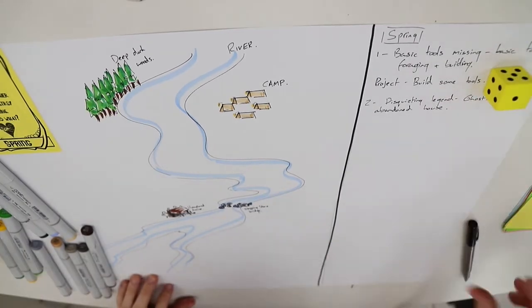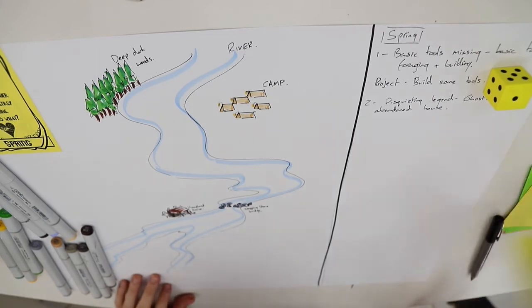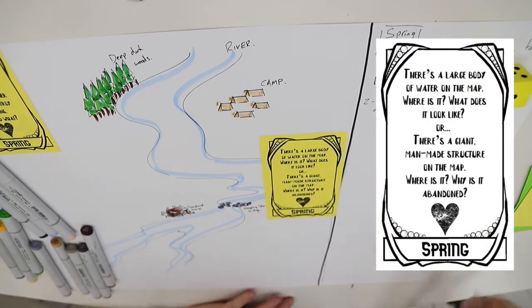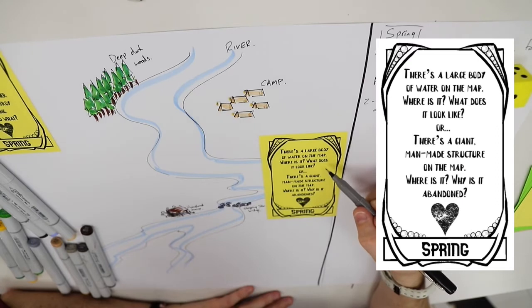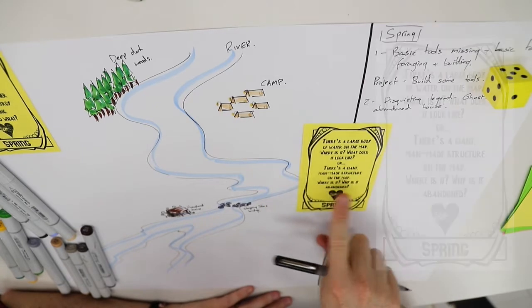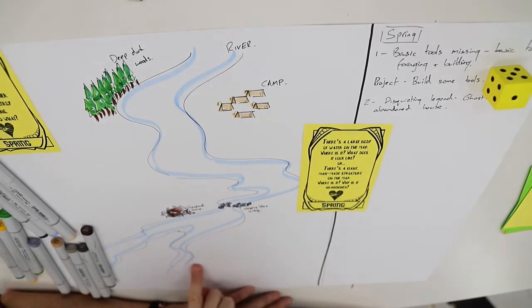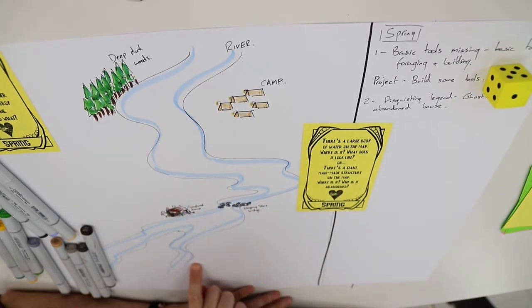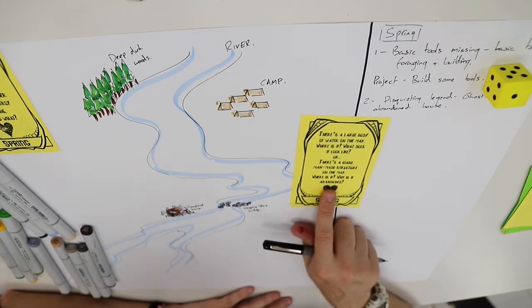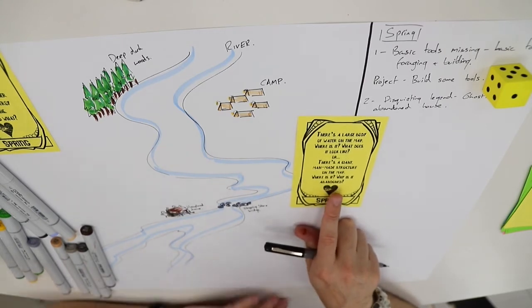Let's take this down for one - this is one week remaining on this. Draw one more card. "There's a large body of water on the map. Where is it, what's it look like? Or there's a giant man-made structure on the map. Where is it, why is it abandoned?" We already have this giant river, so I don't think we need another large body of water.